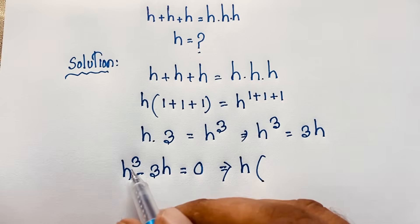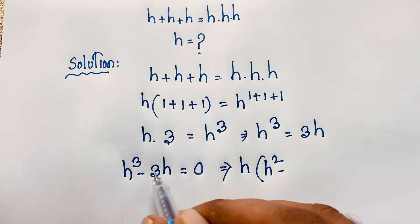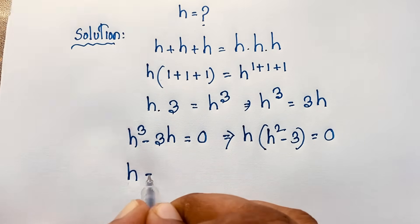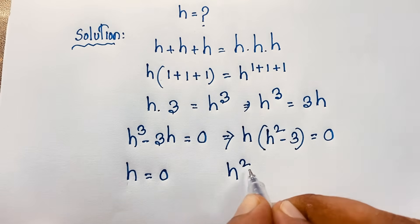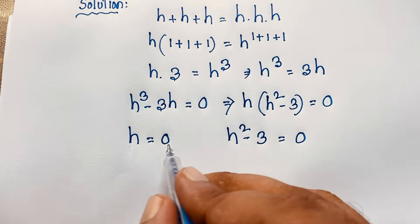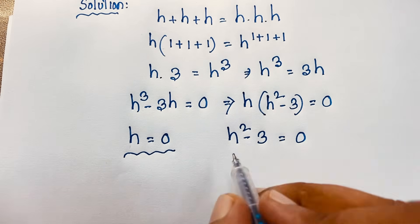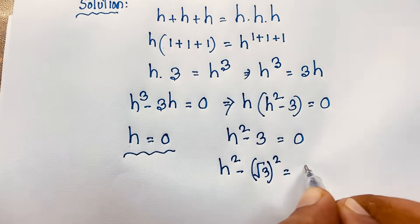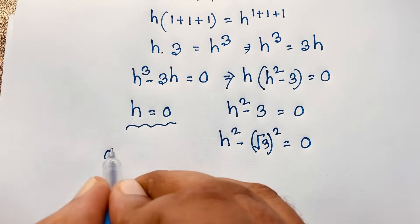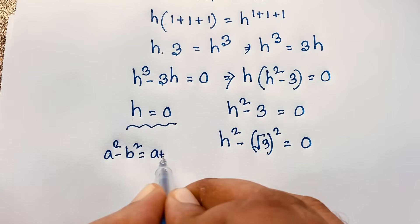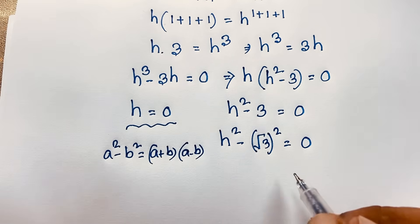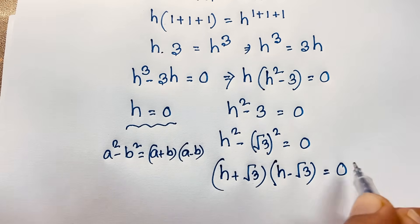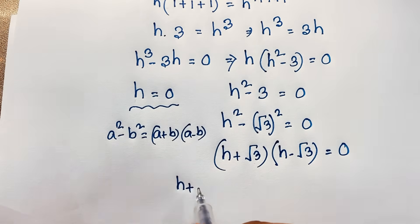You can see h is common here, so taking h out: h squared minus 3 is equal to 0. Now h equals 0 is our first solution. For h squared minus 3 equals 0, we can write it as h squared minus (√3)² equals 0. Using the difference of squares formula, a² minus b² equals (a+b)(a-b), we get: h plus √3 times h minus √3 equals 0.